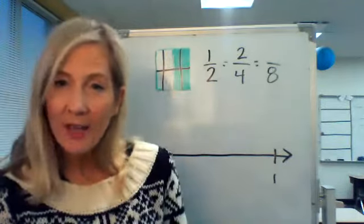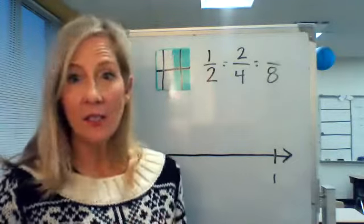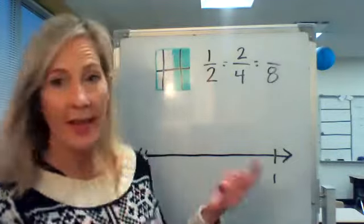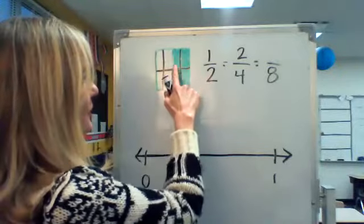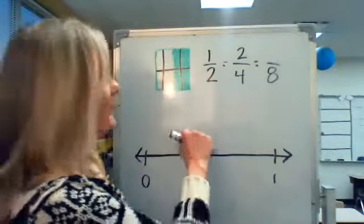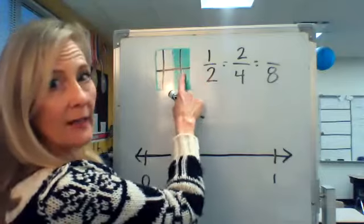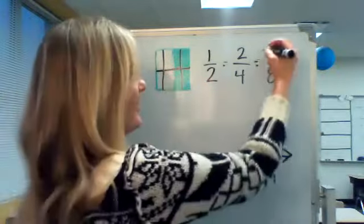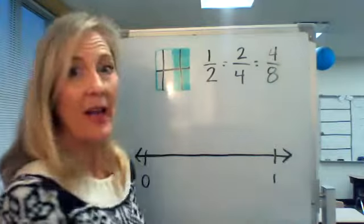And how many eighths would I need to give you if I wanted to still give you one half of the candy bar or whatever it is? I would need to give you one, two, three, four. So four copies of one eighth — one eighth, one eighth, one eighth, and one eighth. I'd need to give you four eighths if I wanted to give you the same amount.